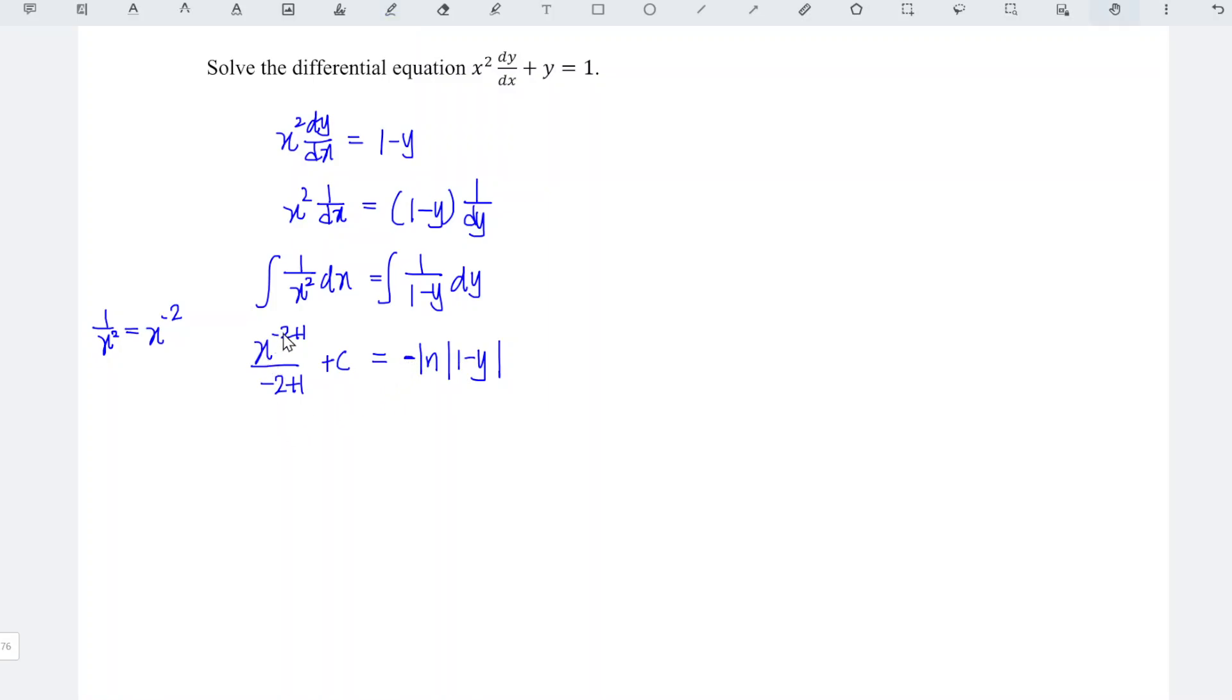x to the power of minus 2 plus 1, which is minus 1, in other words 1 over x. Minus 2 plus 1 is minus 1, plus c equals minus ln |1 minus y|. Rearrange the equation: minus 1 over x plus c moves to the right and becomes 1 over x minus c.